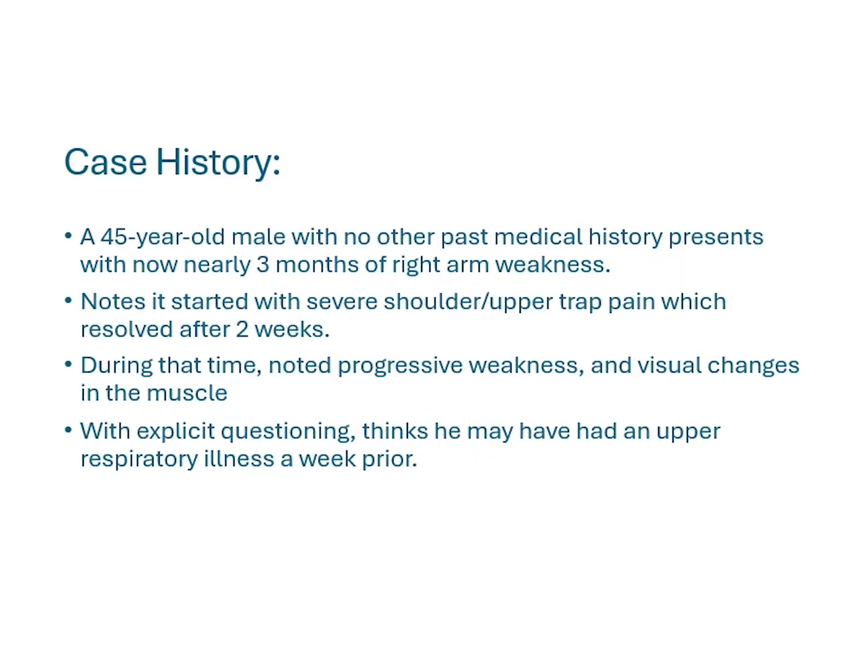We'll start with a case history. This was a patient we saw in our peripheral nerve injury clinic — a 45-year-old man, otherwise healthy, presenting with about three months of right arm weakness with no signs of improvement.